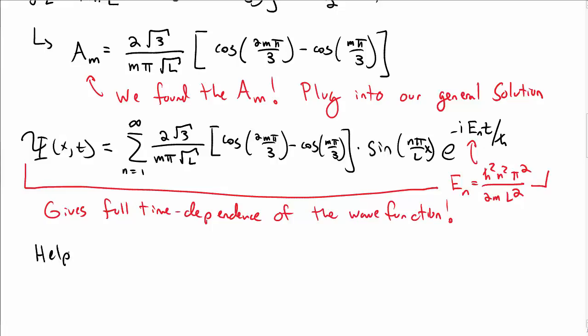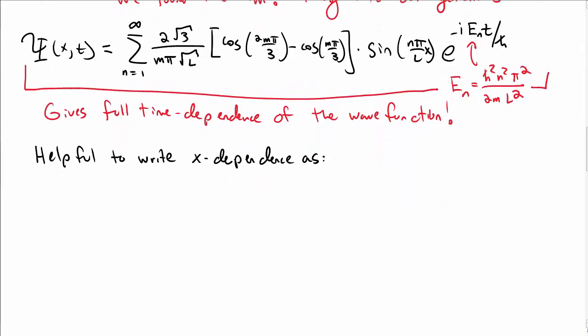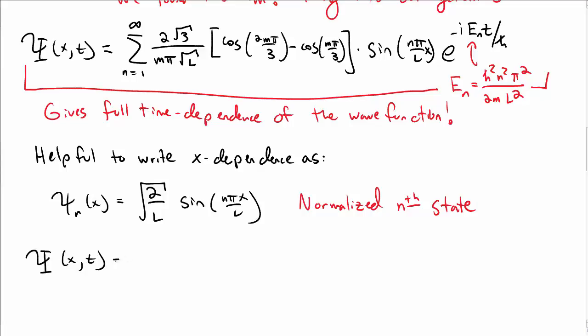It turns out, though, that it's helpful to rewrite this in a slightly better way. In particular, we can rewrite the x dependence in terms of the wave function psi sub n, which is square root of 2 over L, sine of n pi x over L. These are the normalized n-th state wave functions of the particle in a box. So these individual wave functions are themselves individually normalized.